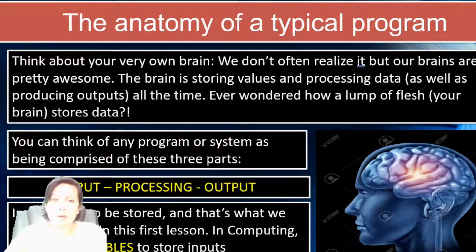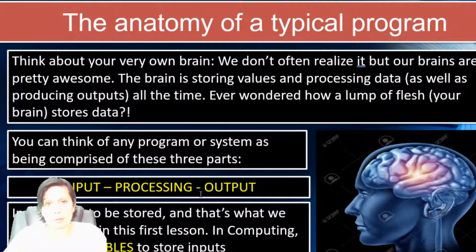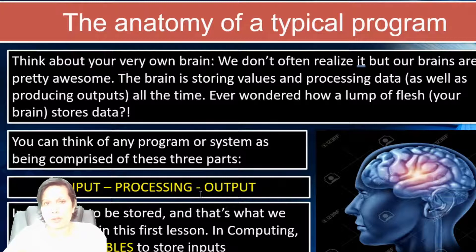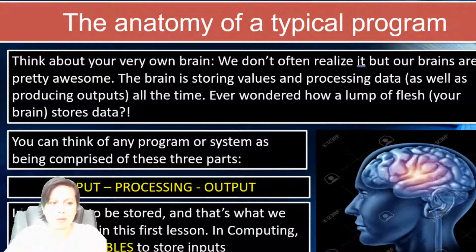The anatomy of a typical program is something that has three components to it. Input, processing, and output. So, just think about that when you write any program. It's something goes in, into a variable. We're going to learn about what variables are. It's processed, and it's output, just like a human brain, or how a human works.